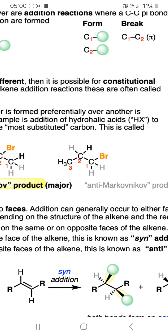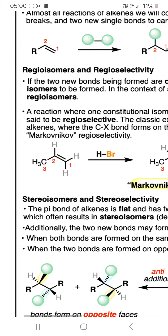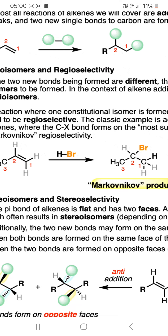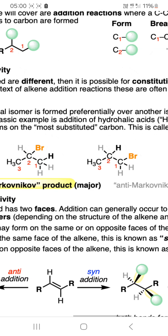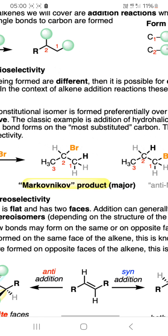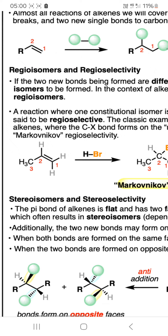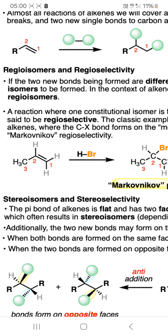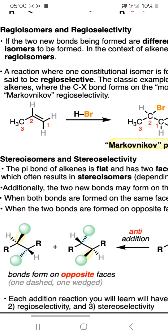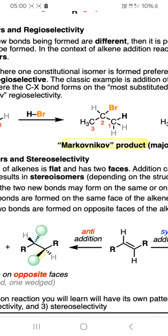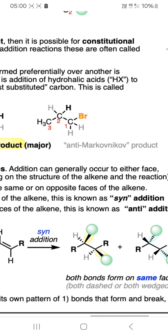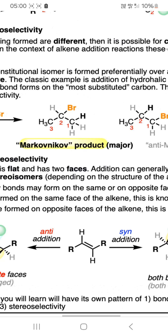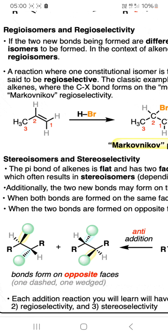Reactions where one constitutional isomer is formed preferentially over another are said to be regioselective. The classic example is addition of hydrohalic acid to an alkene, where the C-X bond forms on the most substituted carbon. This is called Markovnikov regioselectivity. You can see the example with HBr — Br goes to this position, giving the Markovnikov product.